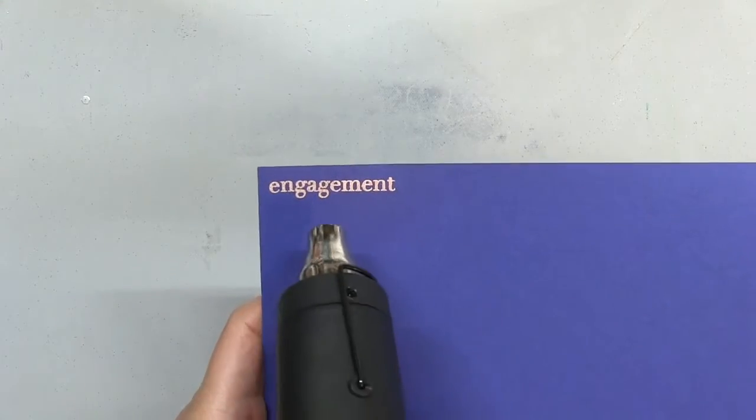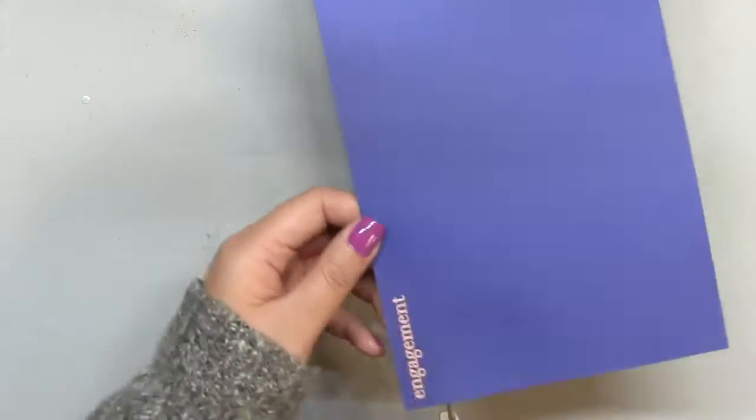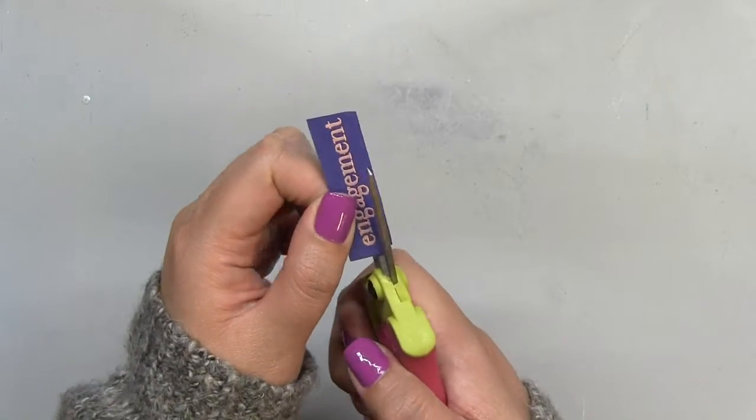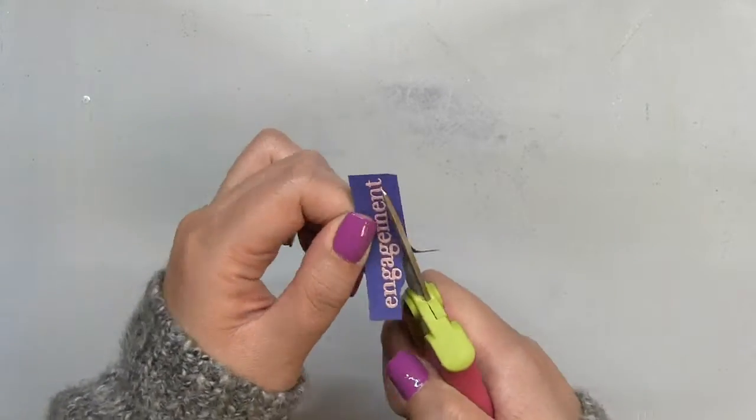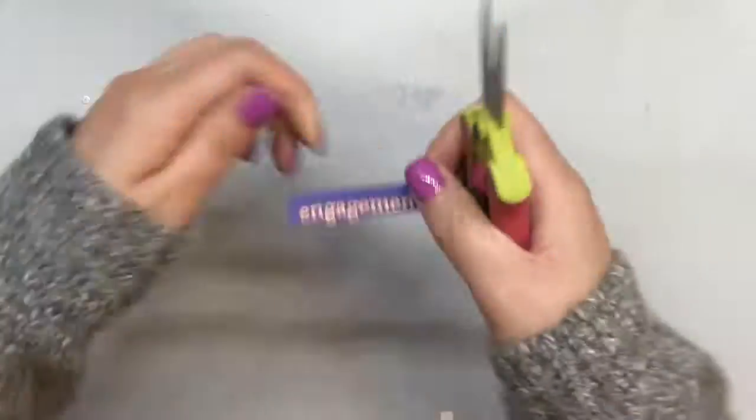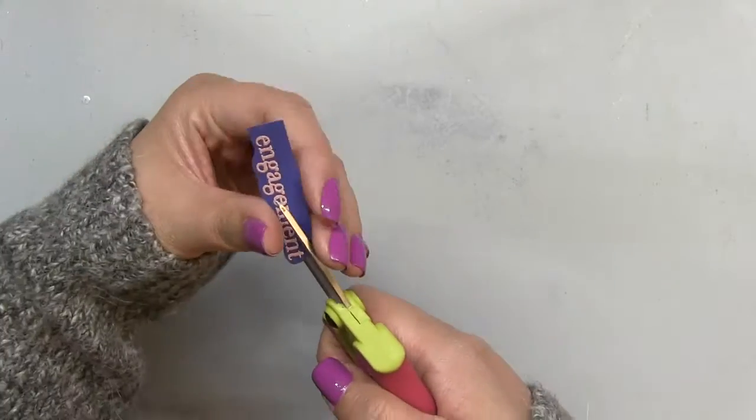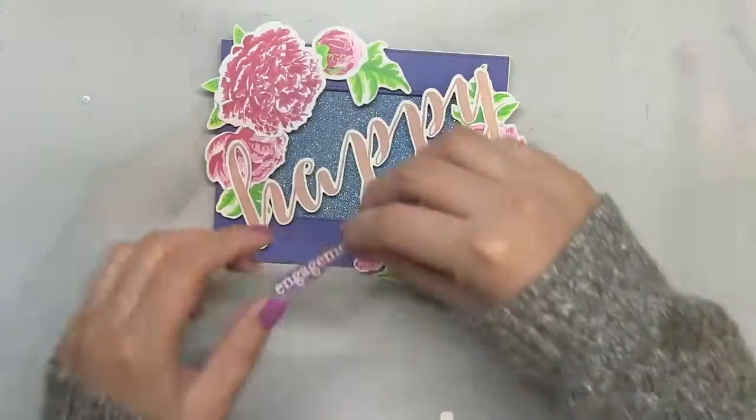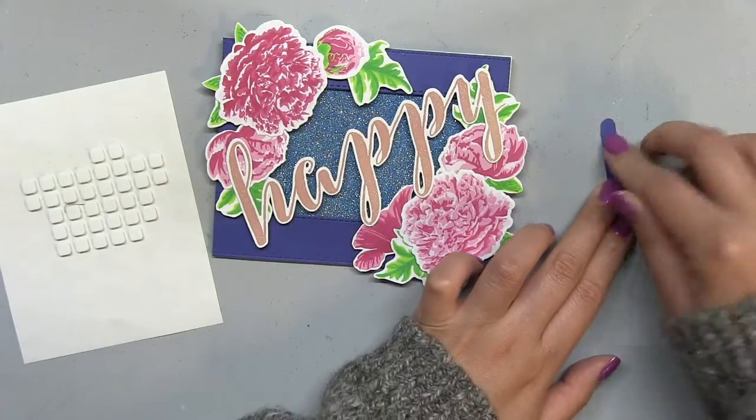So once I finished arranging my florals, I just adhered the large brushed happy down onto my card base. And then I'm going to heat emboss the rest of the sentiment. And this is from the brushed happy set. And I'm going to heat emboss it using the same rose gold embossing powder that I used for the happy. And then I'm going to fussy cut this out and just pop it up right under my happy sentiment.